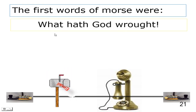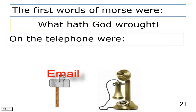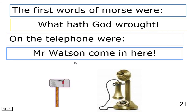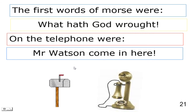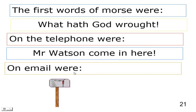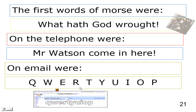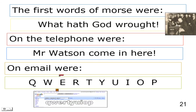The first Morse code message was 'What hath God wrought.' The first telephone message was 'Mr. Watson, come in here.' Ray Tomlinson came up with email - the first email message was 'qwertyuiop', the top line of the keyboard. There is Sir Alexander Graham Bell.